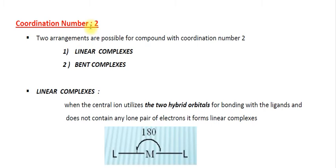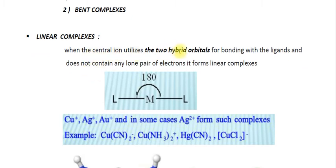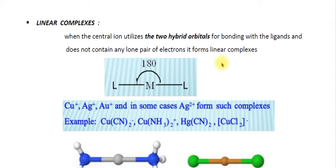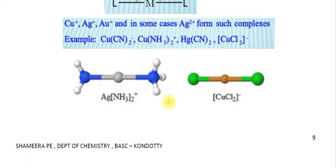For coordination number 2, two types of geometries exist: linear complexes and bent complexes. In linear complexes, the central ion utilizes two hybrid orbitals for bonding with the ligands and does not contain any lone pair of electrons, forming a linear complex. The two ligands are at minimum repulsion with a bond angle of 180 degrees. Examples include [Cu(CN)₂]⁻, [Cu(NH₃)₂]⁺, [Hg(CN)₂], and [CuCl₂]⁻.